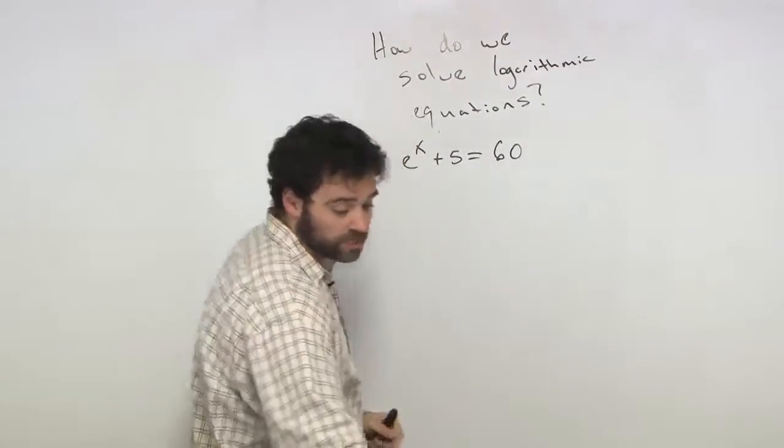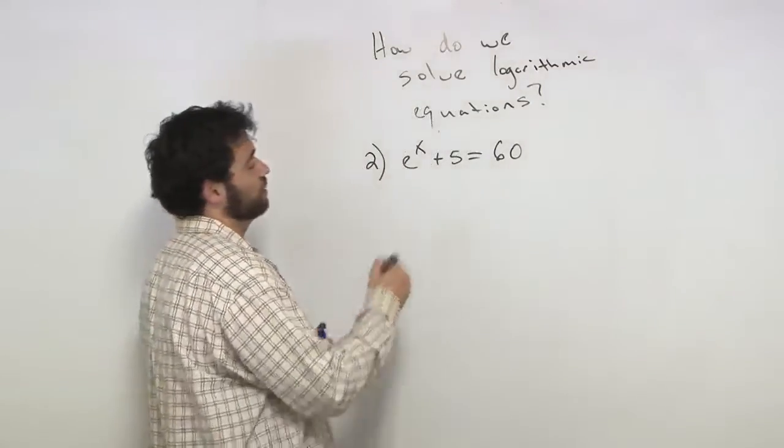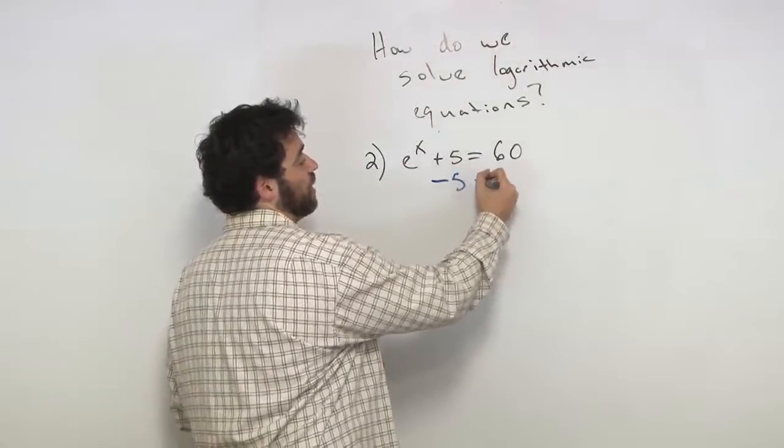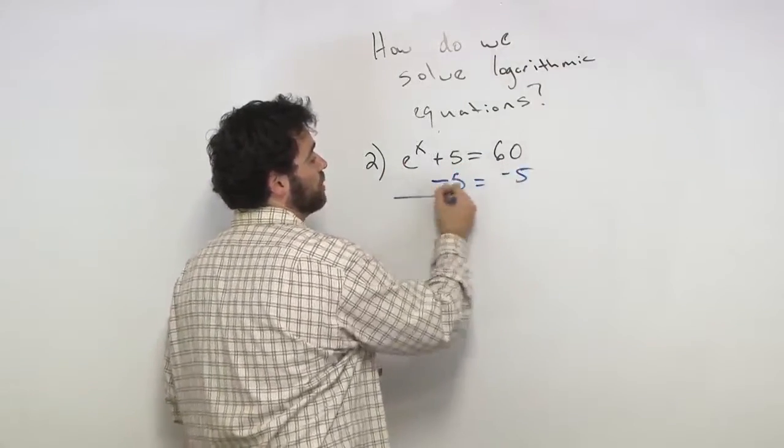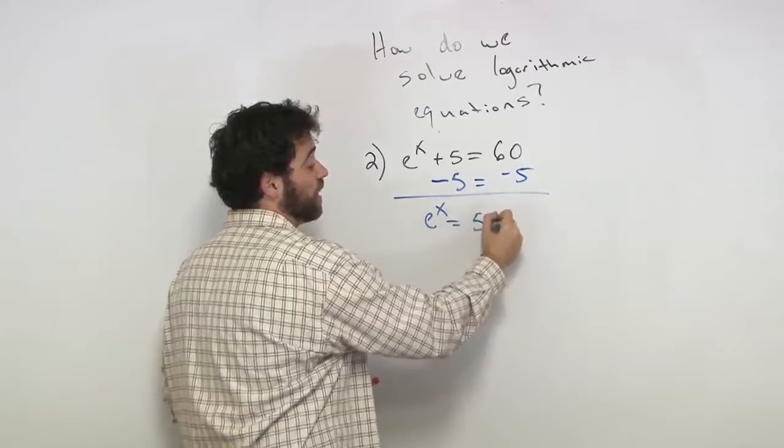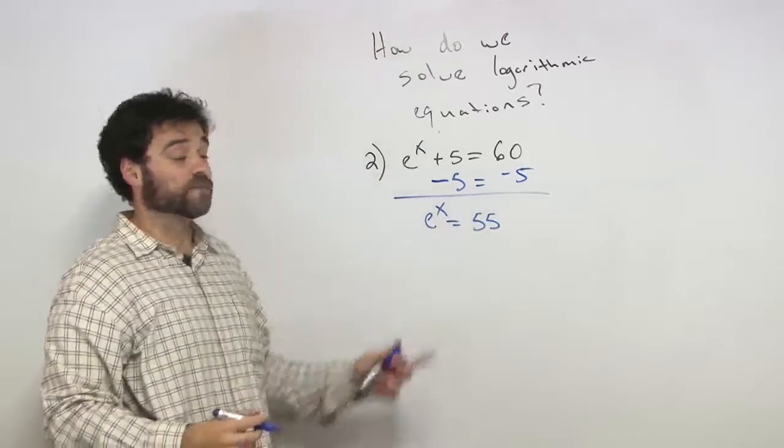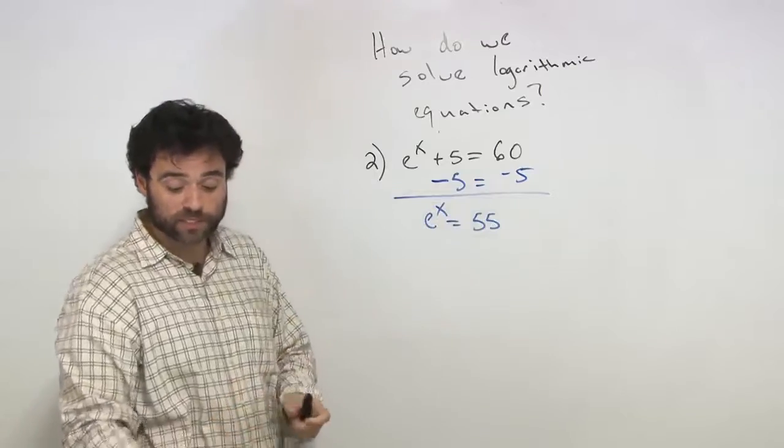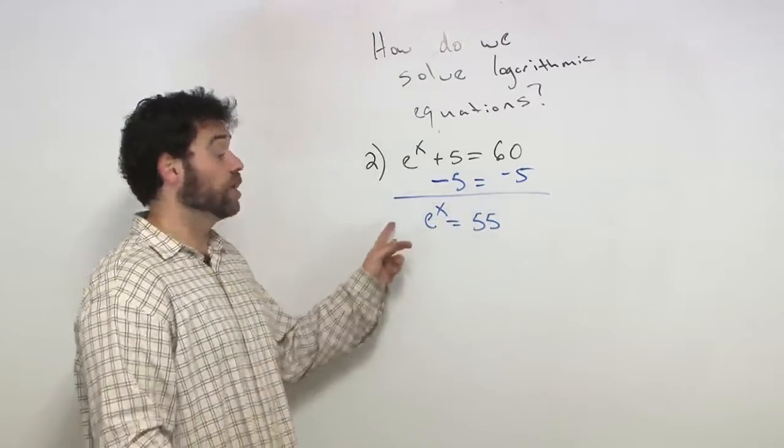What am I going to do? I'm going to subtract away the 5. Step one, subtract away that 5. I get e to the x is equal to 55. What do I do next? What are we going to do next? Great question.